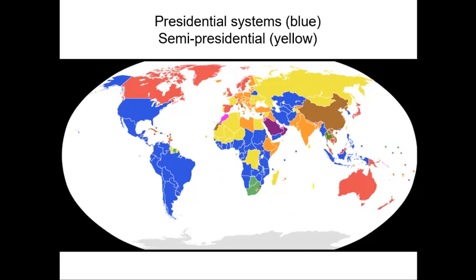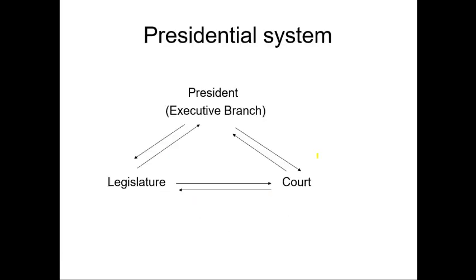Some presidential systems on that map are not considered democracies — more authoritarian systems. The other countries in yellow and orange are somewhat hybrid type systems, with yellow representing semi-presidential systems. We'll be focusing mainly on the United States presidential system. We have the executive branch overseen by the president; the reason it's called the presidential system is because the president has considerable power.